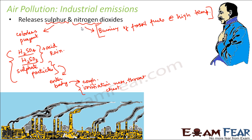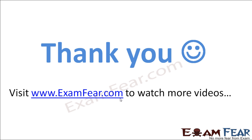Nitrogen dioxide easily mixes with particles present in the air, polluting it. It can also form various acids like nitric acid (HNO3), which again can fall in the form of acid rain. Nitrogen dioxide causes several harmful effects in human beings if inhaled, including cough, lung infection, asthma, and respiratory infection — the respiratory system gets damaged if sulfate or nitrogen compounds are taken into the body.